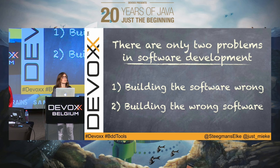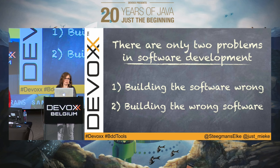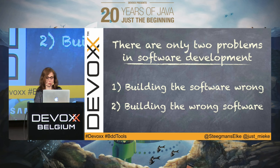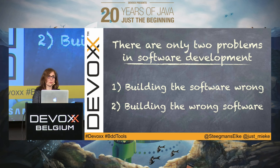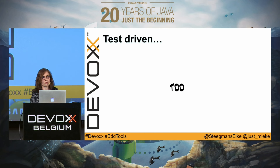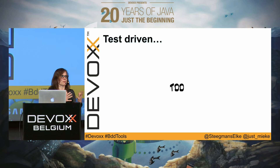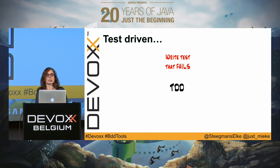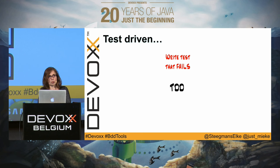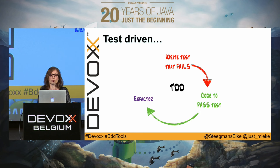We're teaching bachelor's applied information technology, and we're teaching them how to build software. We would also like to teach them how to build software right and how to build the right software, which is not always easy. That is one reason we try to introduce testing in our curriculum — so they learn how to build software right. And for building the right software, we even try to bring test-driven development into the curriculum, because with TDD the focus is more on preventing bugs and writing better software, starting with writing your tests.